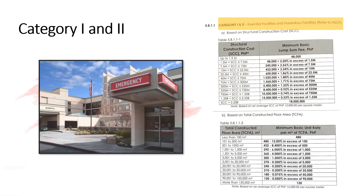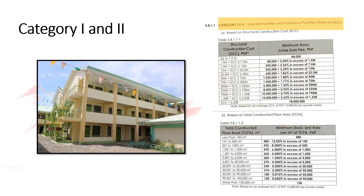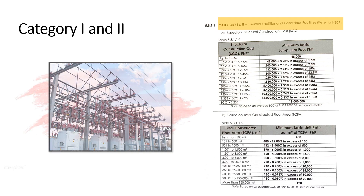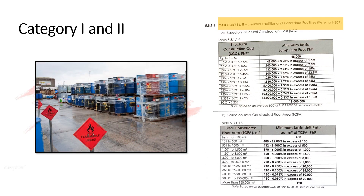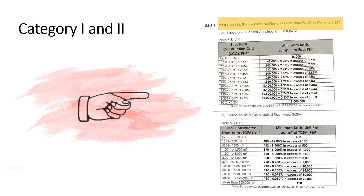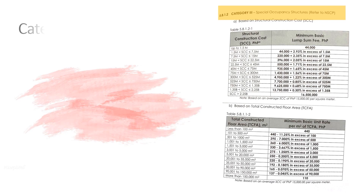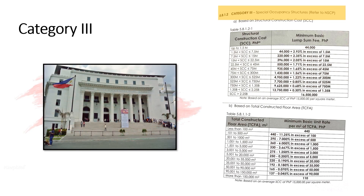Category 1 are Essential Facilities, while Category 2 are Hazardous Facilities. For more information about the structural construction cost, you can refer to the right part of the screen. Category 3 are Special Occupancy Structures.